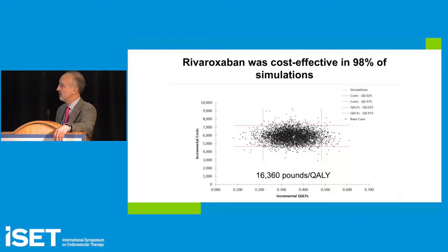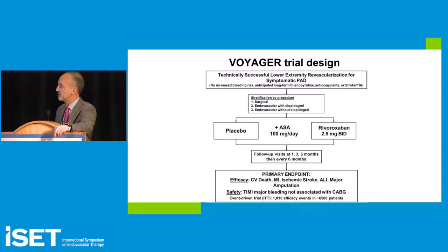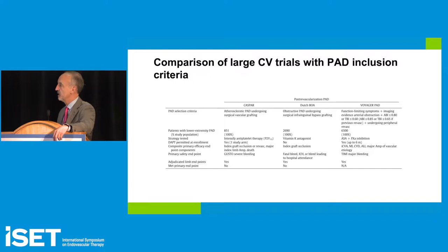Looking ahead: the Voyager PAD study has completed enrollment, examining patients with prior successful lower extremity revascularization and symptomatic PAD, randomized to aspirin plus rivaroxaban versus aspirin alone. Looking at all PAD trials with large cardiovascular trial inclusion, only a few met primary endpoints — the CAPRI trial, the TRAP trial using vorapaxar, and the COMPASS trial. We await the Voyager PAD trial.